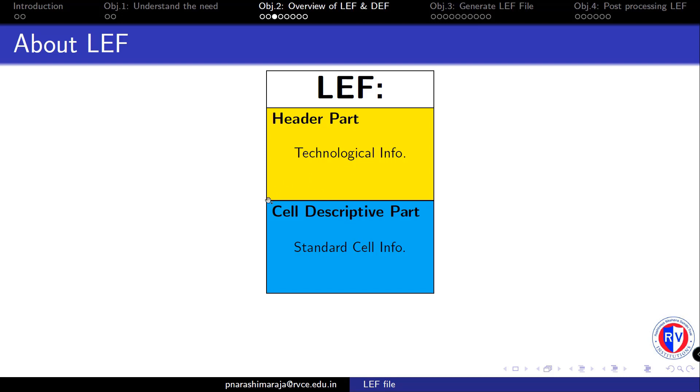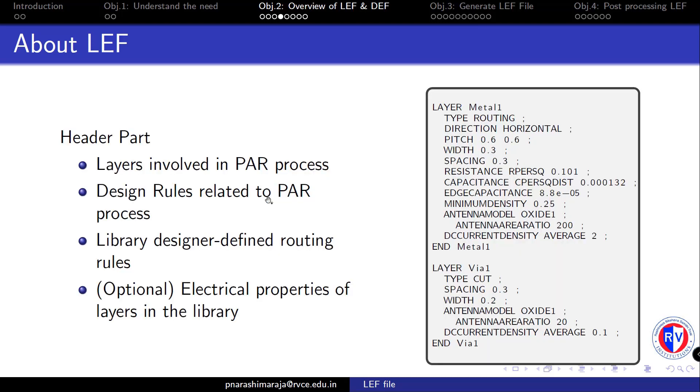So now let us focus on each of these parts to gain a bit more knowledge about it before we generate the LEF file. The header part basically contains technology related information, such as part of layers that are available in our technology, especially the layers that are involved in the place and routing process, and not the other layer information like poly, diffusions, N-wells, etc.